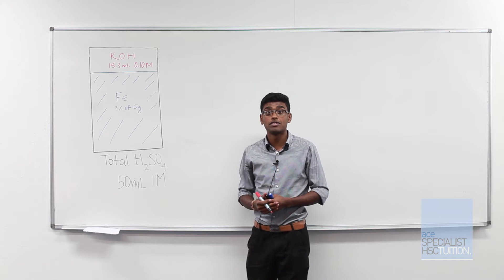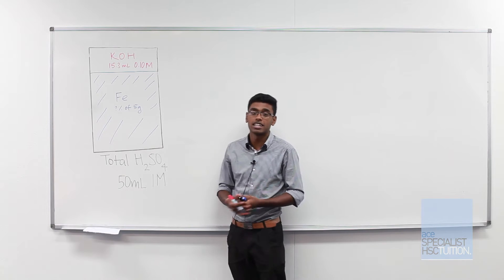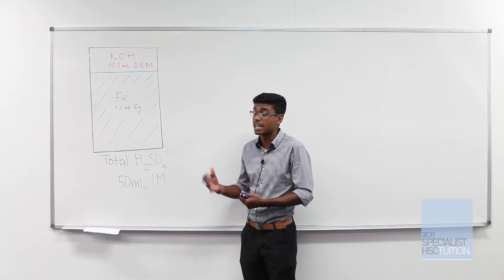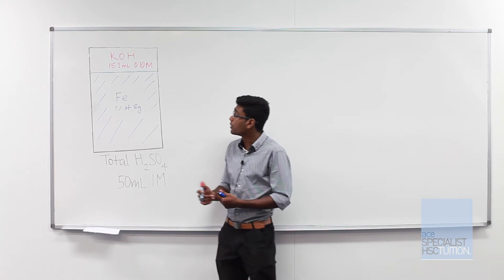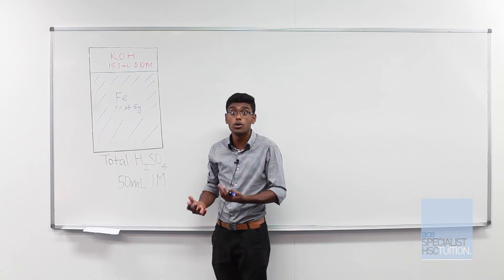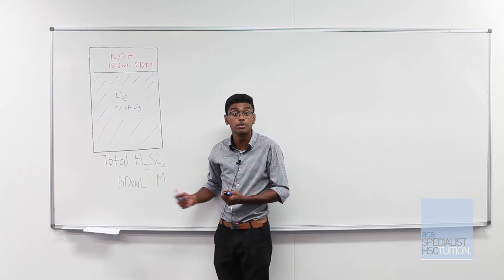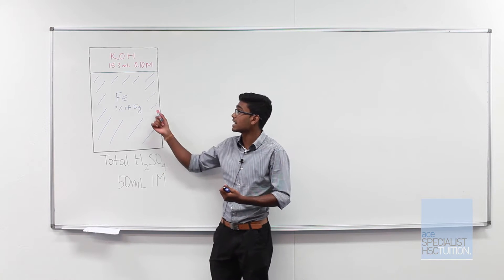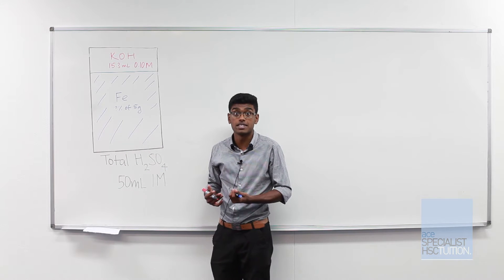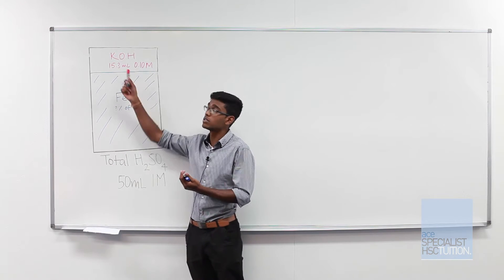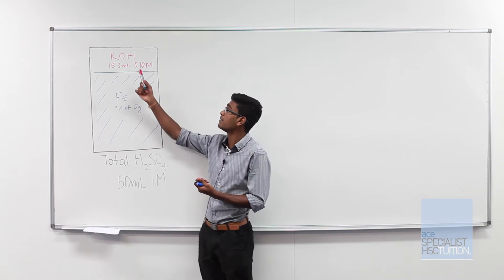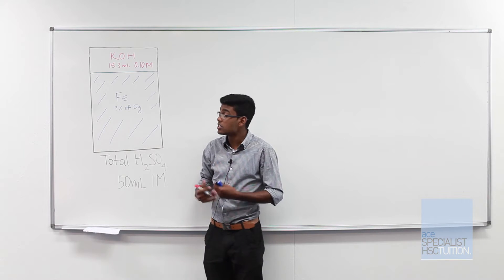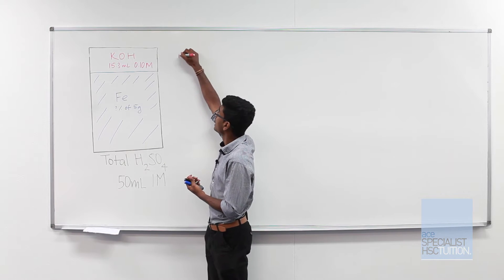So today we have an example of a back titration question. A simple diagram like this will help us understand the concepts behind the question and allow us to plan a way of working out this problem. You can see on the board I've drawn a rectangle representing the total amount of sulfuric acid we begin with. So we have 50 mL of 1 mole per liter sulfuric acid in total. The first thing we do is react that with the iron in our 5 grams of steel. The remainder will react with potassium hydroxide and we're told we require 15.3 mL of 0.1 mole per liter potassium hydroxide for complete reaction.